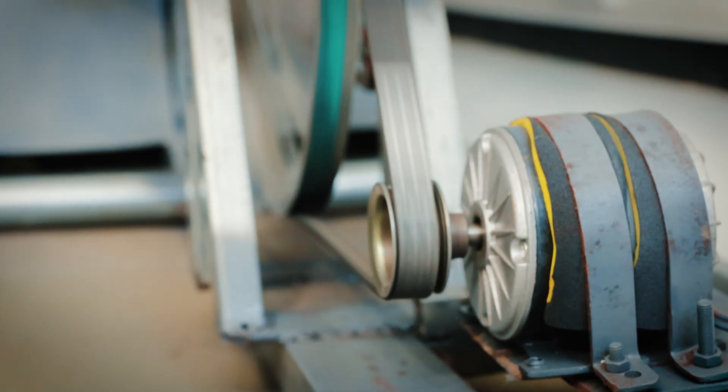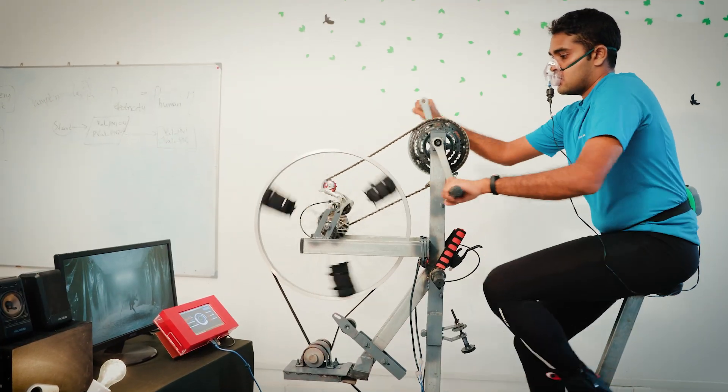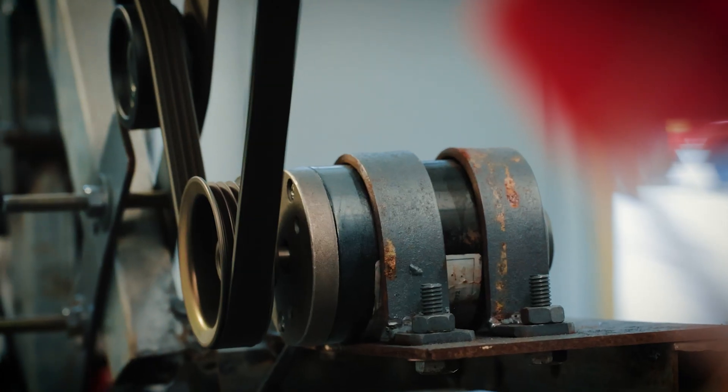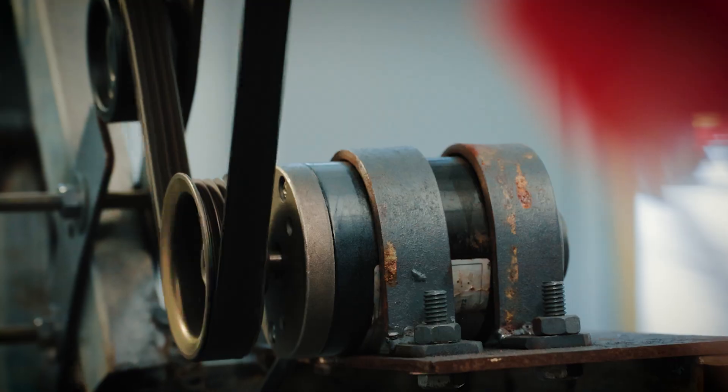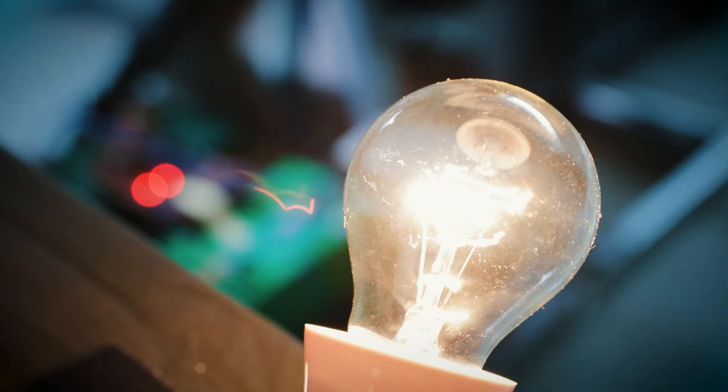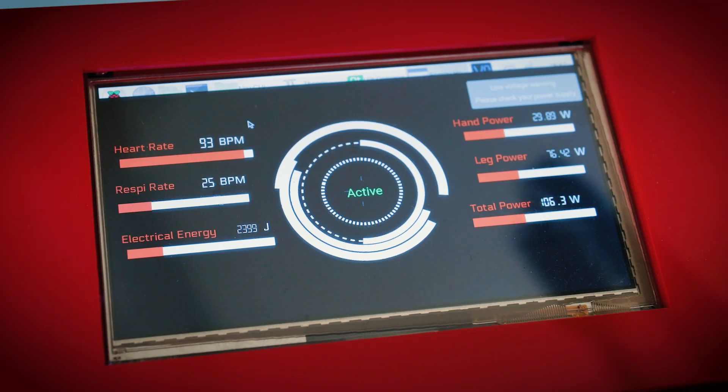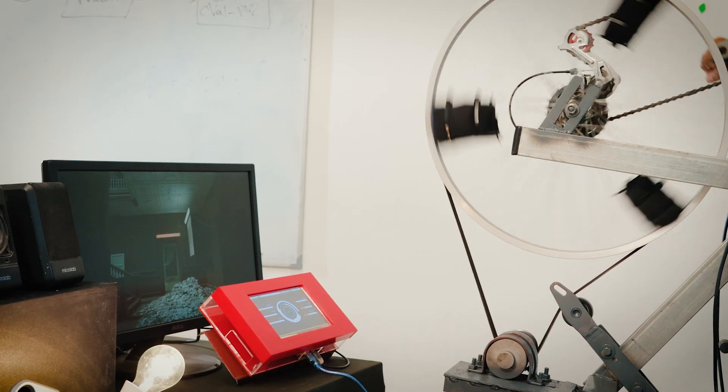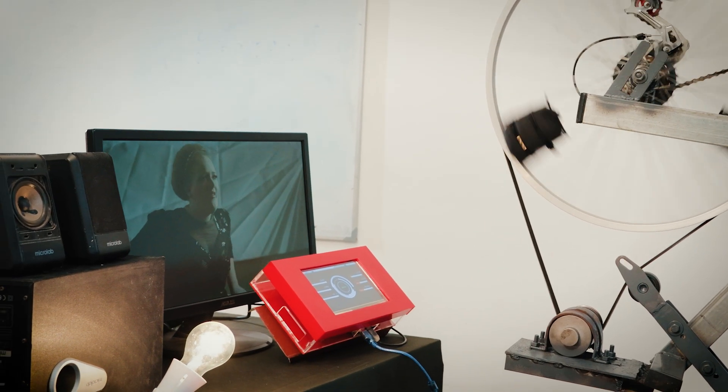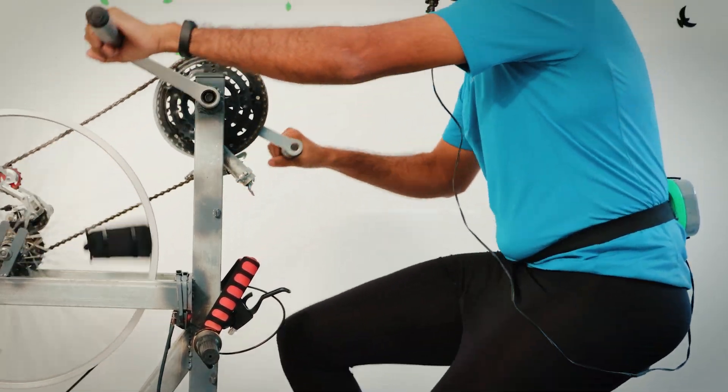The power obtained through the flywheels will be transferred to the DC generators via belt drives. The energy generated through the unit can be stored in batteries to be used as power for consumer loads.